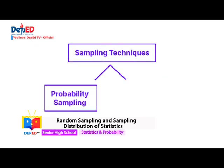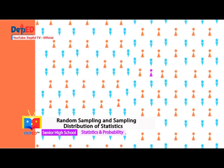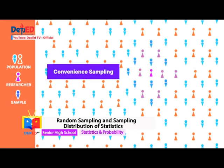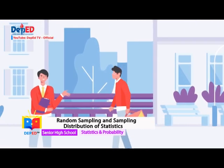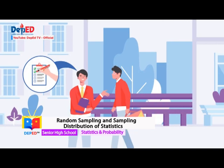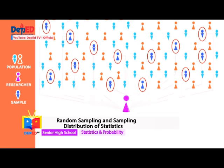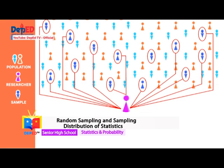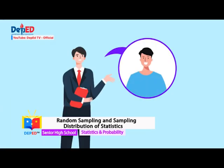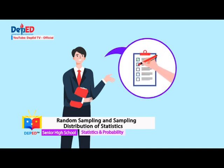Not all sampling techniques involve random selection. Those that do not are called non-probability sampling. One example is convenience sampling, wherein the researcher gathers data from nearby sources of information exerting minimal effort — such as giving questionnaires to passers-by on the street. Another is purposive sampling, where respondents are selected based on the goal of the study. For example, if the study is about children of OFWs, only children of OFWs are sampled, excluding other students.